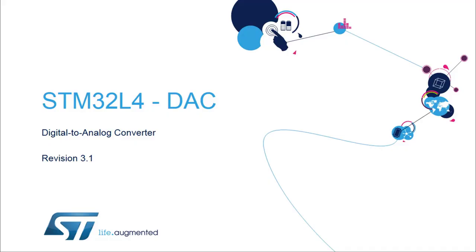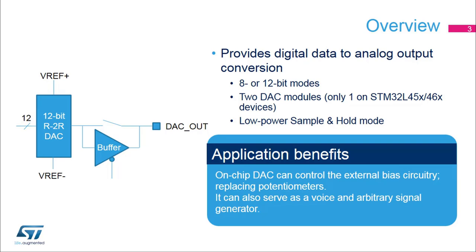Hello and welcome to this presentation of the STM32L4 Digital to Analog Converter. All the features of this analog block will be presented, which are used to convert digital signals to analog voltages which can interface with the external world. The Digital to Analog Converter on STM32L products ensures the conversion of 8 or 12-bit digital data to the analog voltage.